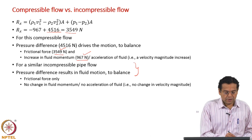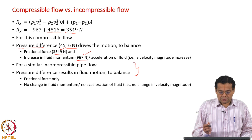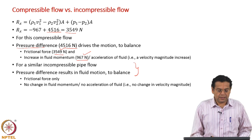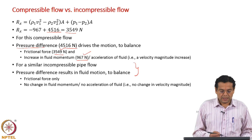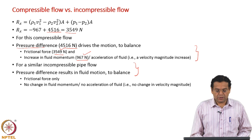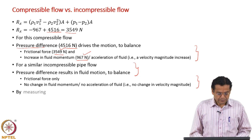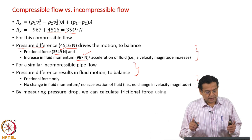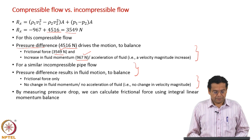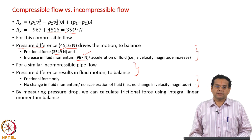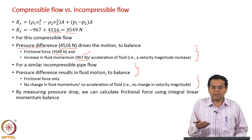The pressure difference — equivalently expressed in Newtons or Newtons per unit area — is apportioned differently depending on flow type. If compressible, two components contribute: frictional force and fluid acceleration. If incompressible, only the frictional force needs to be overcome. Furthermore, by measuring the pressure drop, we are able to calculate the frictional force using the integral linear momentum balance — measurement is pressure drop, and the balance equation lets us estimate the frictional force.